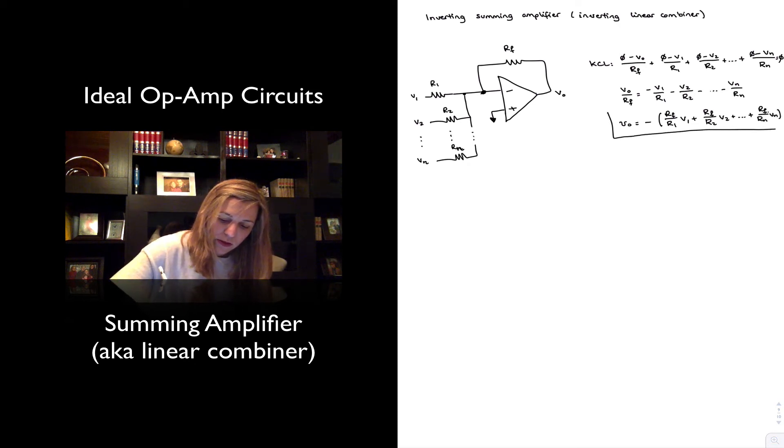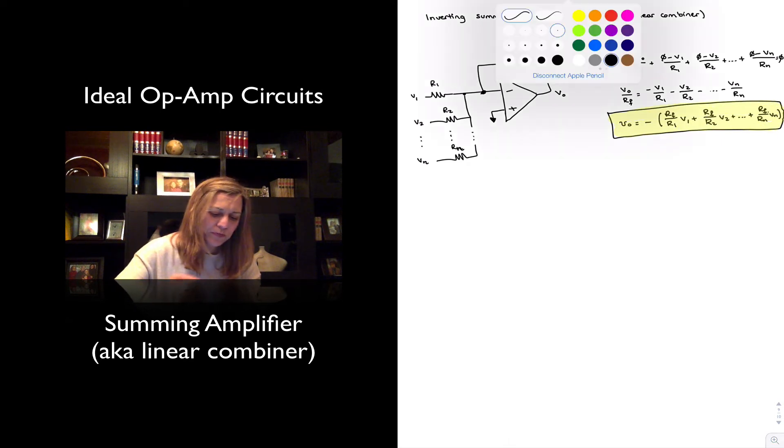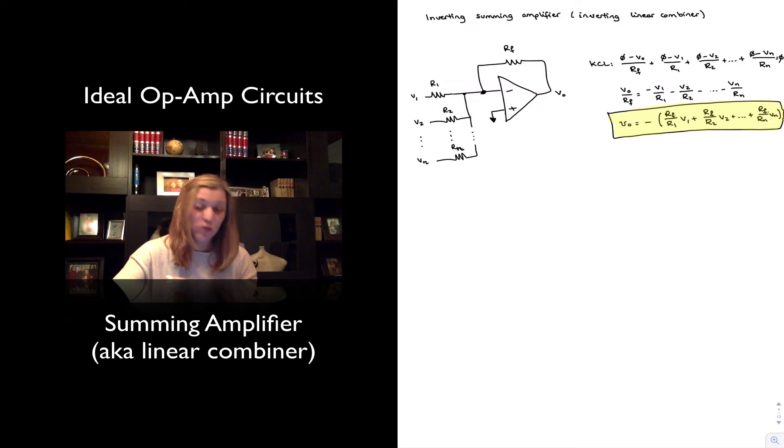That will be the expression for the output and again notice that it is a weighted sum of the different inputs where the weights are provided by the ratio of RF to the individual resistors. Notice that the output is inverted with respect to if all the inputs are positive then the output will be a negative voltage and that's because it's an inverting summing amplifier.